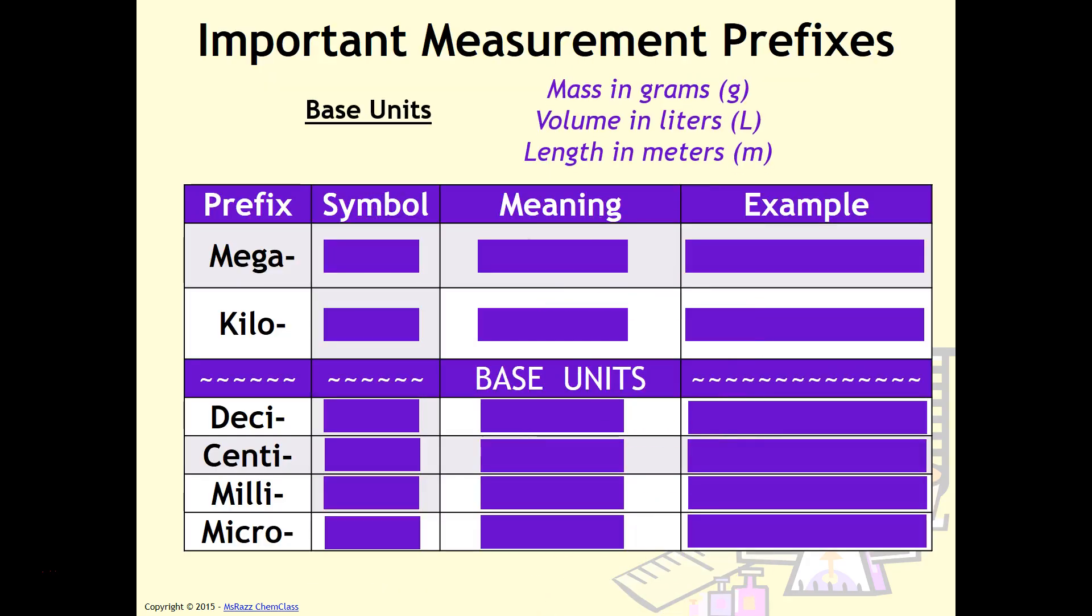There are important measurement prefixes that you will need to know. Depending on your teacher, your teacher may expect you to memorize these or may give you something on a quiz or test to use. But it's important for you to note that there are different ways to modify these base units. So in chemistry, the base unit for mass is grams, the base unit for volume is liters, and the base unit for length is meters.